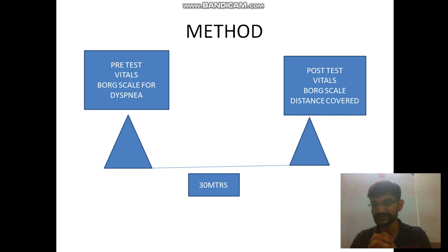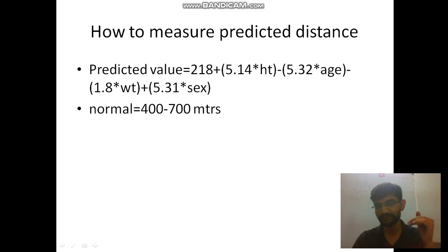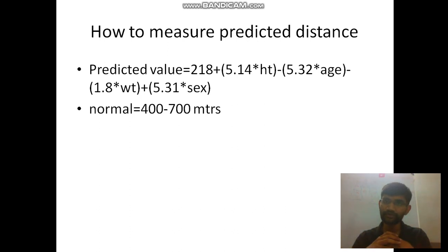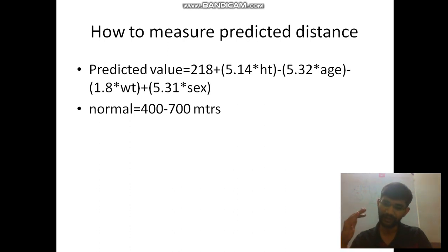The predicted distance for each patient uses the formula: 218 + (5.14 × height) − (5.32 × age) − (1.8 × weight) + (5.31 × sex), where sex = 1 for male and 0 for female. Instead of this complicated formula, many people use the general normal range of 400 to 700 meters. An improvement of 70 meters or more with each session indicates the therapy is working.